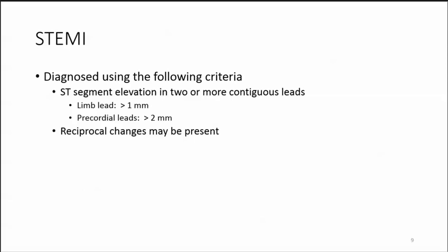STEMI is diagnosed using the following criteria: ST segment elevation in two or more contiguous leads — meaning back to back; limb lead elevation greater than one millimeter; precordial leads greater than two millimeters; and reciprocal changes may be present.